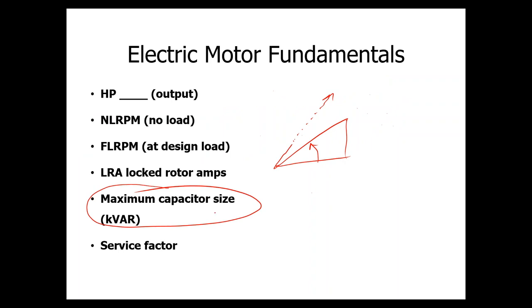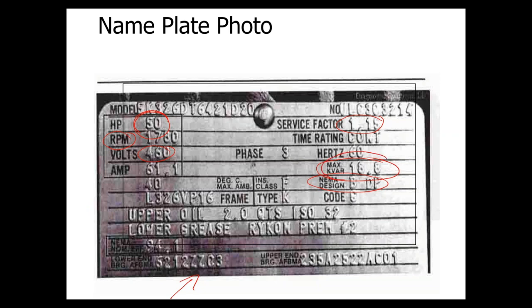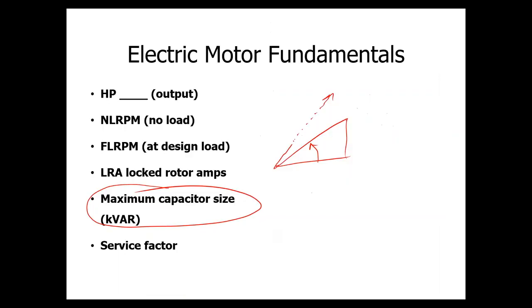What they do in motors is they already know in the lab how much a motor is going to mess up the electric power quality. They tell you on the motor, and you can see this right here, where they're telling you what the maximum size capacitor you would need to put on that motor to correct the power factor back to a reasonable number.